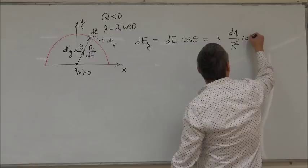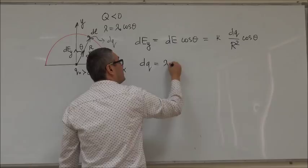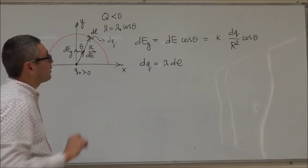So, R squared times cos theta. So, now let's express DQ in terms of lambda. Now, we know that DQ is equal to lambda DL, where DL is the length of that element, of that arc.